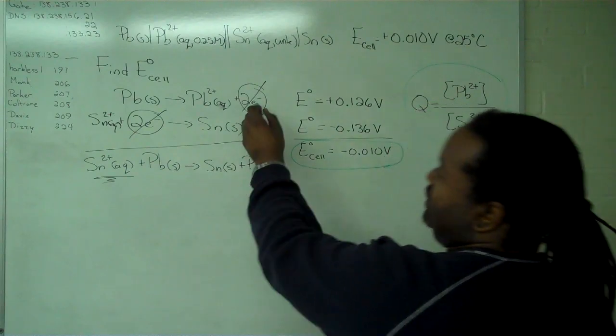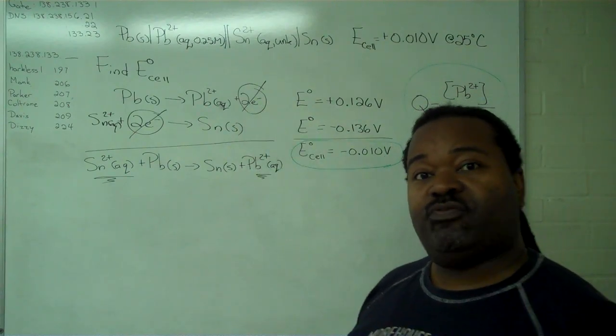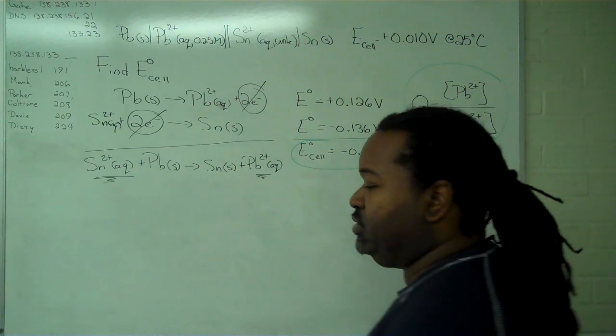We recognize that we're using two electrons. Now we apply the final step: the Nernst equation.